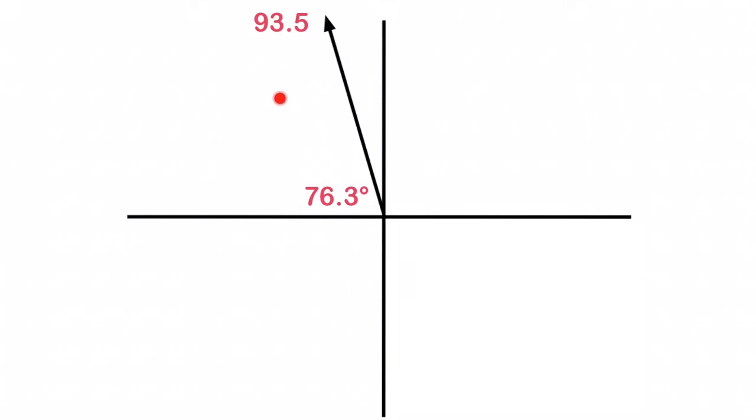Now again, we're in quadrant number two, so my answer is not 93.5 at 76.3 degrees. I've got to take 180 degrees here and subtract 76.3 degrees from it. So 180 minus 76.3 gives me 103.7 degrees.